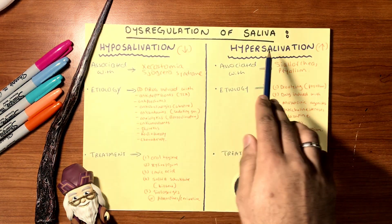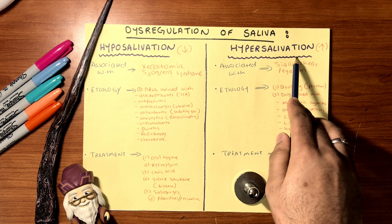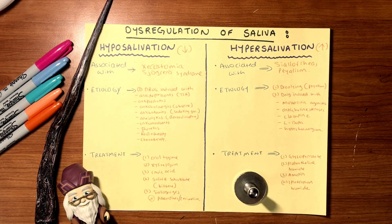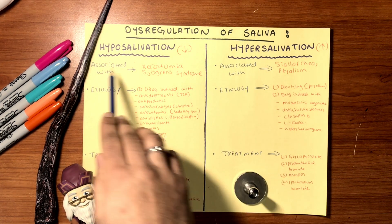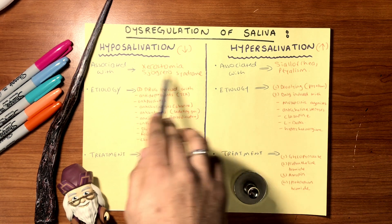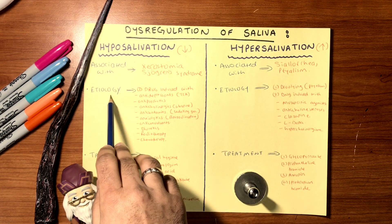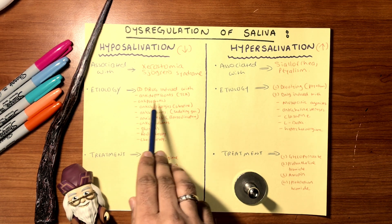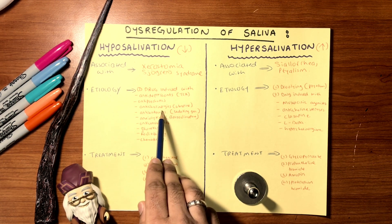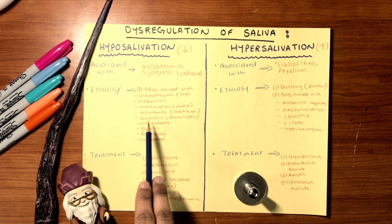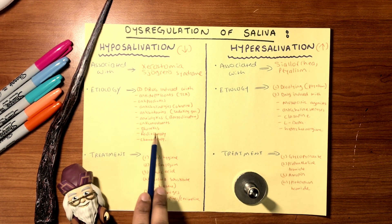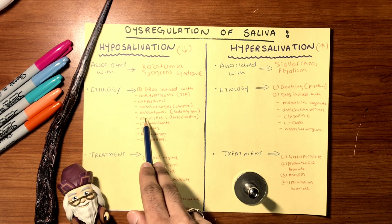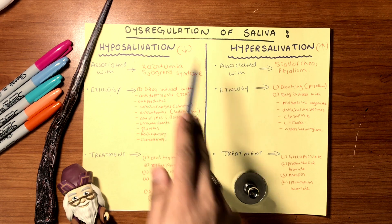Let's begin with dysregulation of saliva — hyposalivation and hypersalivation. Hyposalivation, which is reduced salivary flow production, can be associated with xerostomia or Sjögren's syndrome, basically dry mouth. The etiology is drug-induced: antidepressants, antipsychotics, anticholinergics, antihistamines, anxiolytics, anticonvulsants, diuretics, radiotherapy, and chemotherapy. So if you 'anti' anything, it will reduce the salivary flow causing xerostomia.